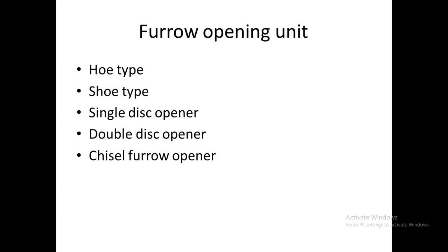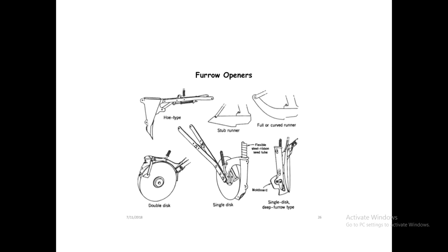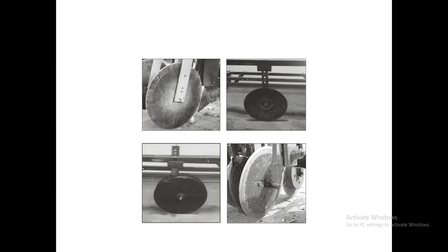The furrow opening unit comes in several types: hoe type, shoe type, single disc, double disc, and chisel furrow opener. The hoe type uses a hoe-shaped component to cut open a furrow. In the double disc type, two discs work together to open a furrow on either side. In the chisel furrow opener, a chisel-shaped component opens the furrow. In the double disc arrangement, the two discs are not parallel to each other but are in a staggered arrangement.